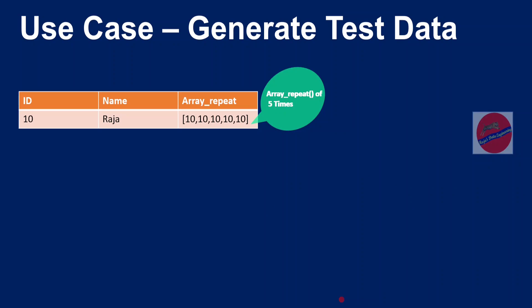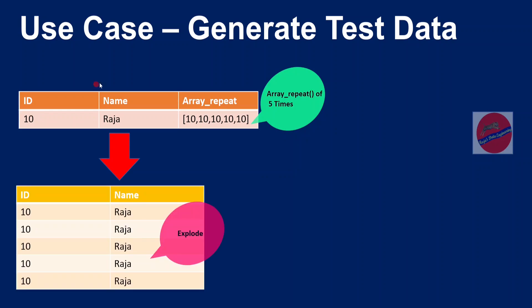Now moving into the use case — I am using the same example with a dataframe having id and name. I have already applied arrayRepeat, which created a new column with 5 repetitions of the id. Now, in order to convert this one record into 5 different records, I apply the explode function. Explode splits each array element into a separate row combined with the rest of the record, resulting in 5 new records.